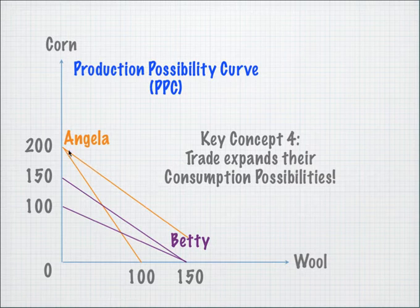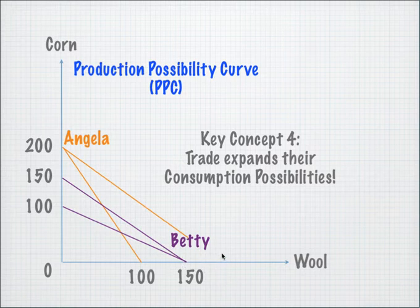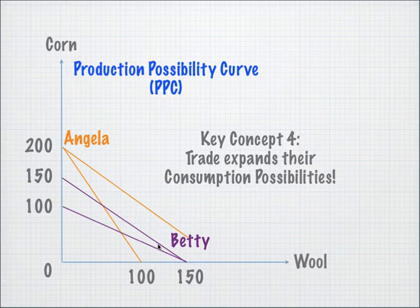Let's say Angela decides to produce 200 units of corn and Betty decides to produce 150 units of wool. They then trade with one another at a rate of 1 to 1. Now Angela can consume at any point on this line here, and Betty can consume at any point on this line. You can see that trade actually expands their consumption possibilities. This is one important idea we will look at in future lessons.